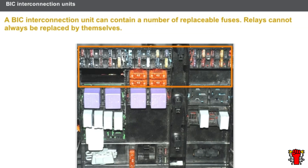A BIC interconnection unit can contain a number of replaceable fuses. Some vehicles have several BIC interconnection units performing the fuse and relay functions. Relays cannot always be replaced by themselves; they may be dependent on the BIC interconnection unit.